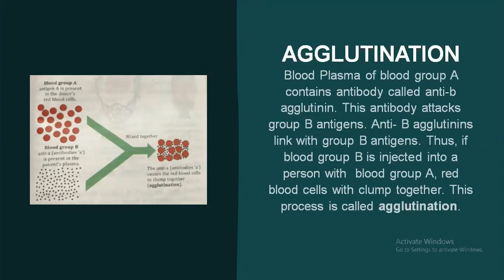People with blood group AB can receive any blood group because of the absence of clumping. For this reason, a person with blood group AB is called a universal recipient. A person with blood group O is called a universal donor because his red blood cells have no antigens.